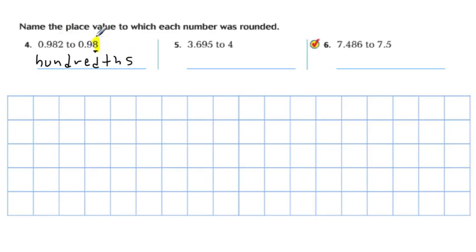Next one, 3.695. It was rounded to 4. That 4 is in what place? It's in the ones place. So it was rounded to the ones.